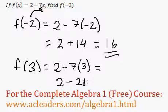So basically we have 2 minus 21, 2 take away 21, negative 19.